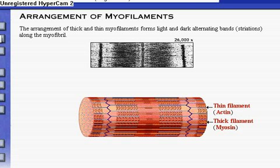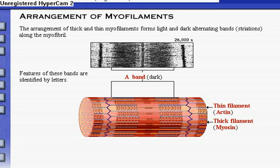The arrangement of thick and thin myofilaments forms light and dark alternating bands along the myofibril. This creates the cell's striated appearance, as shown in this photomicrograph and diagram. Features of the light and dark bands are identified by letters. The dark bands are called A-bands, and the A-band corresponds to the length of the thick filaments. The light bands, called I-bands, alternate with the dark bands. The I-band contains only thin filaments and corresponds to the distance between adjacent thick filaments. During muscle contraction, the I-band gets narrower.